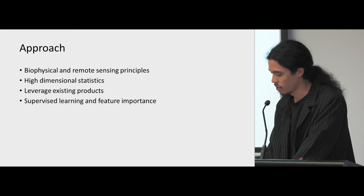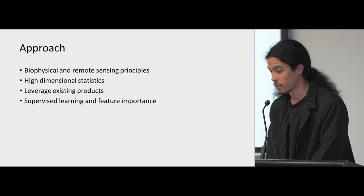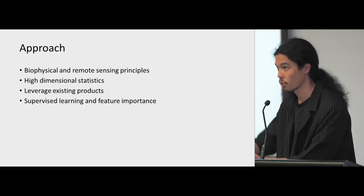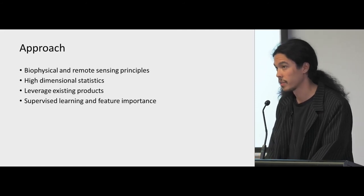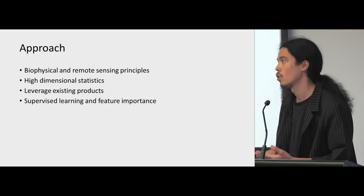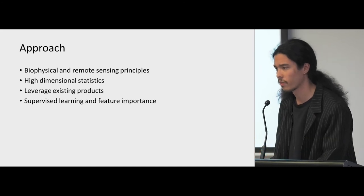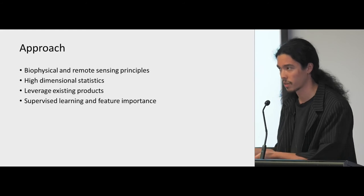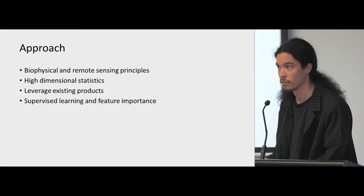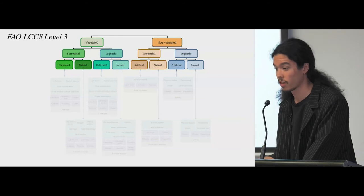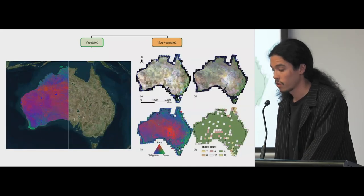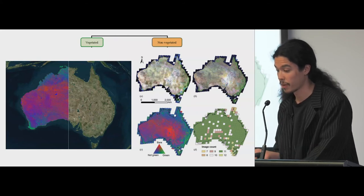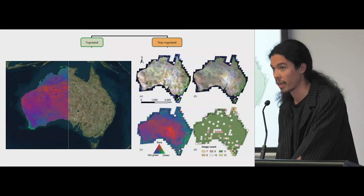I'm just going to talk about our approach to how we separate out the classes. We use biophysical and remote sensing principles, high-dimensional statistics — which really exploits that dense time series of satellite data in the cube — and we leverage existing products. We're not starting from scratch with something like a neural network. We also use supervised learning, particularly to pick out the importance of different features. So you can get a bunch of indices, give it your training samples, and use something like a decision tree in Python's scikit-learn to help rank the importance of those features. Starting with vegetated and non-vegetated, that uses the fractional cover product, which talks about the greenness — it does a spectral unmixing for each pixel and talks about the proportion that is green, bare, or non-photosynthetic.